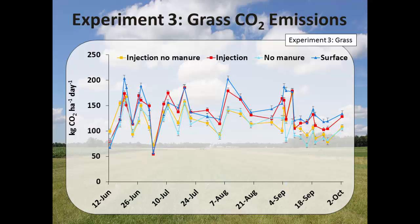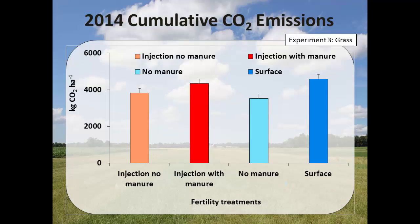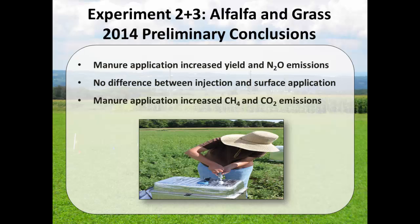Looking at carbon dioxide emissions in grass, we saw a very similar trend to alfalfa. Cumulative CO2 emissions were higher in manure plots compared to no-manure plots, but there are basically no differences between surface-applied and injected manure. Preliminary conclusions for the grass and alfalfa study: manure application increased yield but also increased nitrous oxide emissions. No differences were found between injection versus surface application. Manure application also increased methane and CO2 emissions, which is attributed to what we observed in the grass study — likely a peak we missed at the time of application.